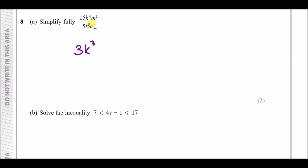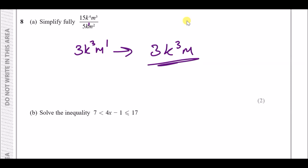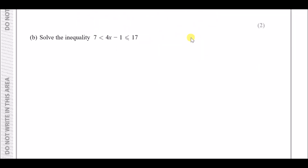Then for m to the power of 3 over m to the power of 2: subtract the powers, so 3 take away 2 is 1, leaving m to the power of 1. The final simplified answer is 3k³m.